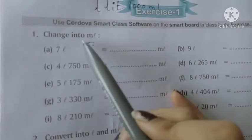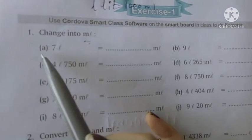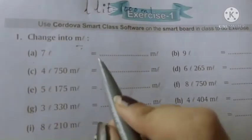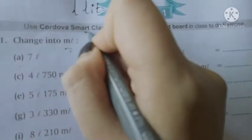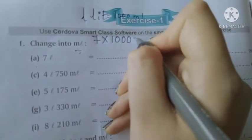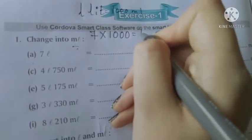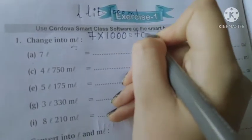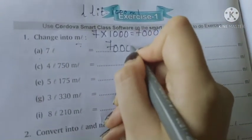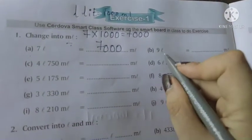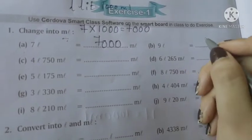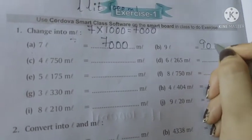Number A: 7 liter is equal to dash milliliter. Simply 7 multiply 1000, so our answer is 7000 milliliter. Number B: 9 liter - 9 multiply 1000, our answer is 9000 milliliter.